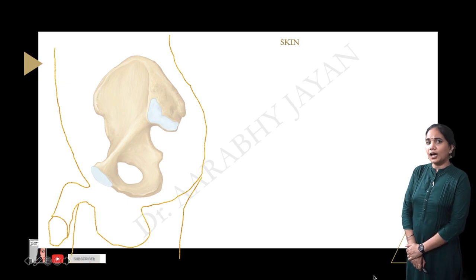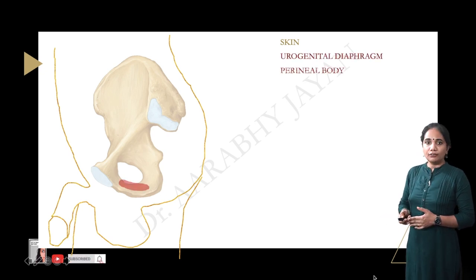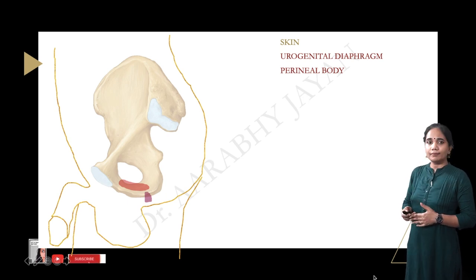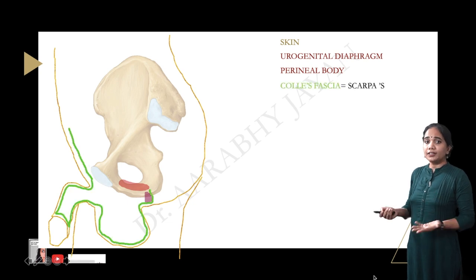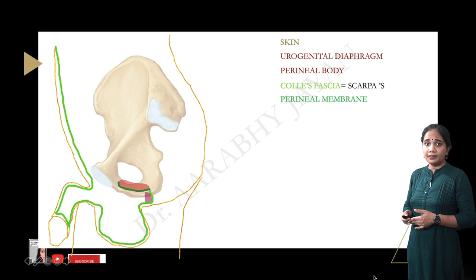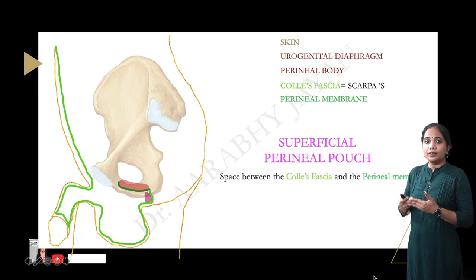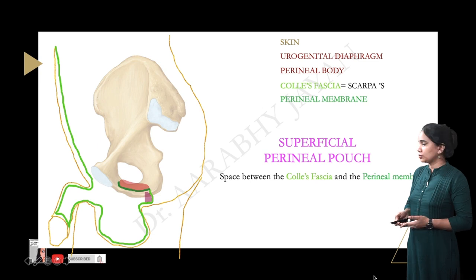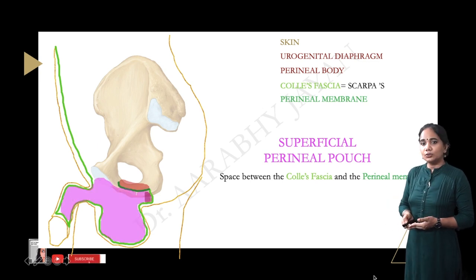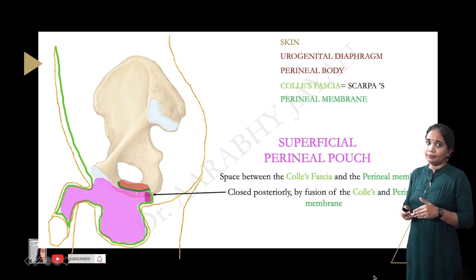To locate the pouches: in a half-section of the pelvis, we place the outline of the skin, the urogenital diaphragm, and the perineal body. Then we draw Colles' fascia, which is continuous above as the Scarpa's fascia of the anterior abdominal wall, and the perineal membrane — the inferior fascia of the urogenital diaphragm — shown in dark green. The superficial perineal pouch is the space between Colles' fascia below and the perineal membrane above. It is closed posteriorly by the fusion of Colles' fascia and the perineal membrane around the posterior border of the superficial transverse perineal muscle.